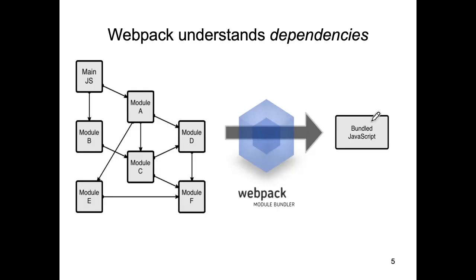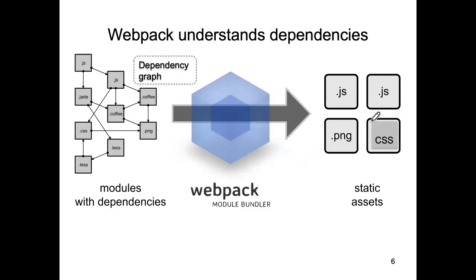The bundle — also referred to as a chunk — contains your source code converted into pure JavaScript and CSS, all packaged into one physical file sent to your browser. Alternatively, you can get webpack to produce multiple bundles, typically a combination of JavaScript bundles, CSS bundles, and image bundles. You can control how many JavaScript bundles are produced, and we'll see how in today's lecture.